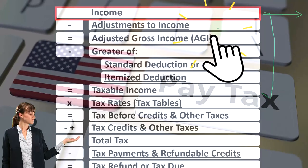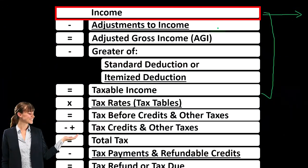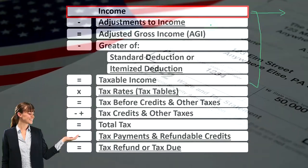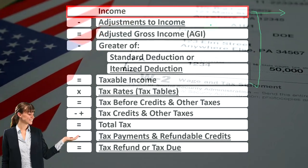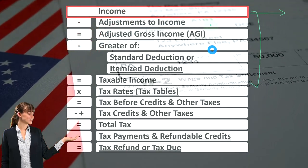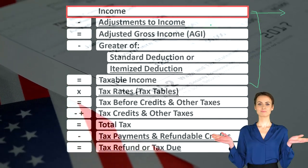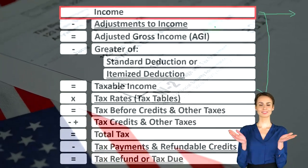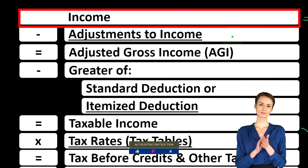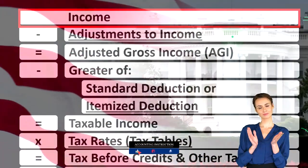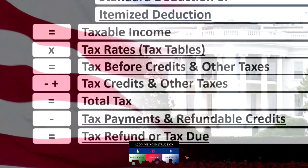Why don't we have those natural-seeming deductions on a normal income tax return with W-2 income? The idea is that the employer provides everything needed, so you don't have those deductions to generate W-2 income. Instead, we have all these other deductions, which is really the government trying to incentivize us and nudge our behavior through the tax code.